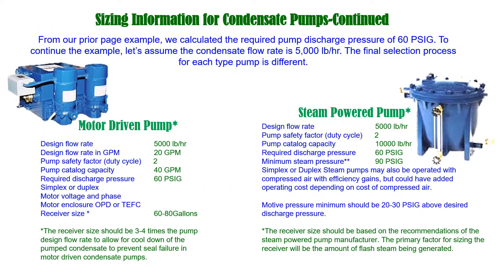Using the discharge pressure of 60 psig calculated, let's look at the selection of either a motor or steam powered pump based on 5,000 pounds per hour of condensate flow. An important conversion is 500 pounds per hour of steam becomes 500 pounds per hour of condensate, which is equal to 1 gallon per minute of flow. In both cases, sizing the receiver is critical to ensure proper pump operation.